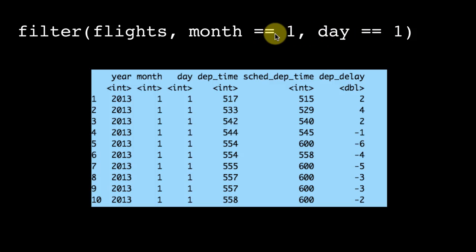Notice that we are doing comparison, so we use double equals, not single equals. And then it comes back with only the corresponding thing. In other words, we want only the rows for January 1st, because month equals 1 is January, day equals 1 is the 1st. The year is 2013.